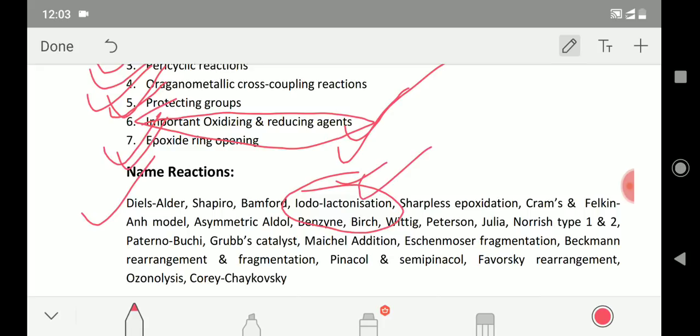Then Sharpless epoxidation. Again, it is a very common topic and always questions come from this. Then Cram's rule, Felkin-Anh model - you should know because diastereoselectivity-based questions come from there.